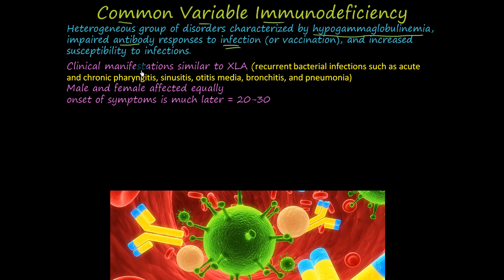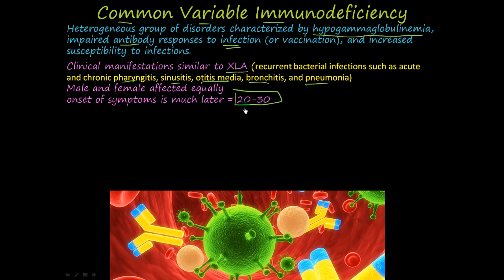There are clinical manifestations that are similar to XLA: reoccurring bacterial infections, acute and chronic pharyngitis, sinusitis, otitis media, ear infections, bronchitis, and pneumonia. Young adults that have these types of recurrent infections — you might think common variable immunodeficiency. Male and female are both affected equally, and it presents much later than XLA or most other primary immune deficiency syndromes, in the 20s and 30s.